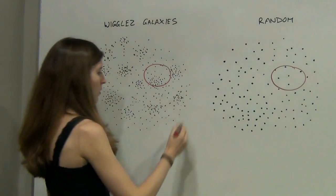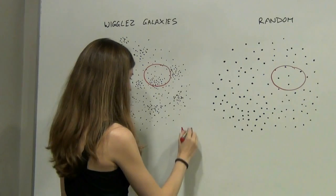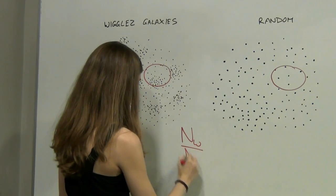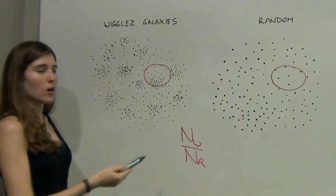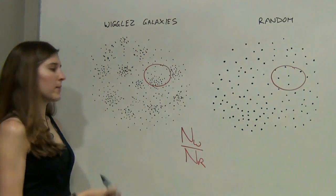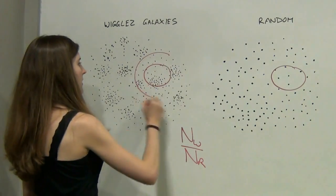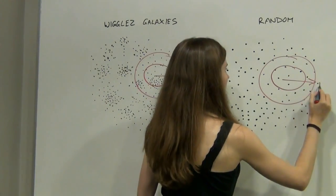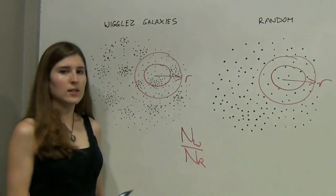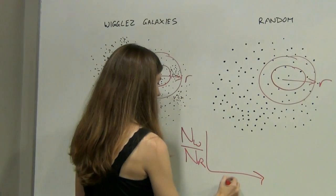We then took the ratio of WiggleZ galaxies to random galaxies, and we took the mean of this over all the galaxies in the survey. We then repeated this for spheres of different radius r, and so this gave us our ratio of WiggleZ to random galaxies as a function of sphere radius.